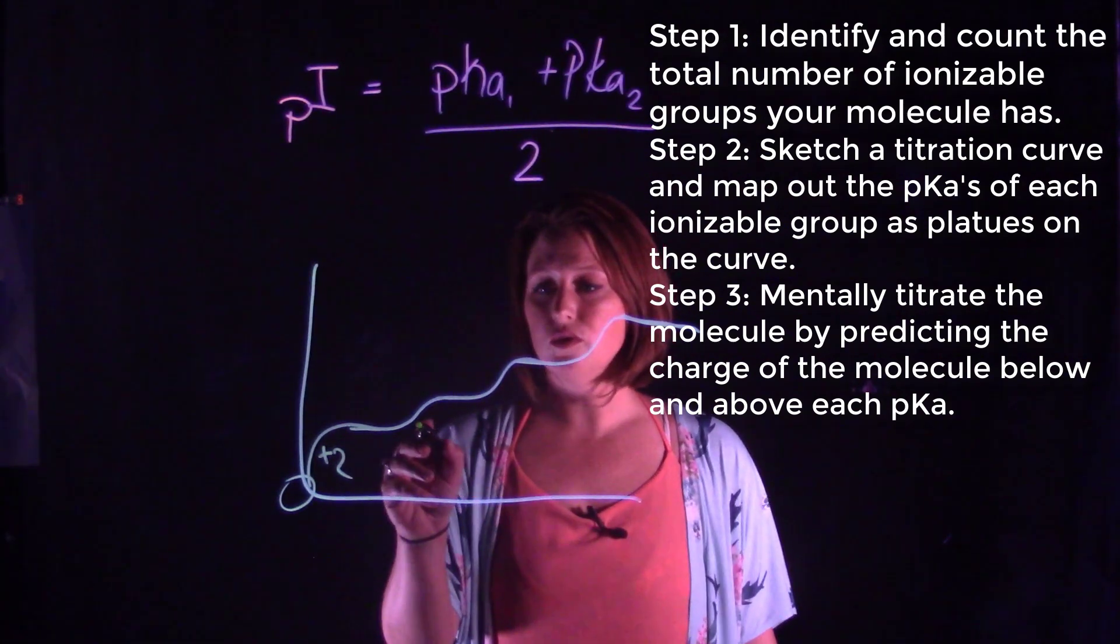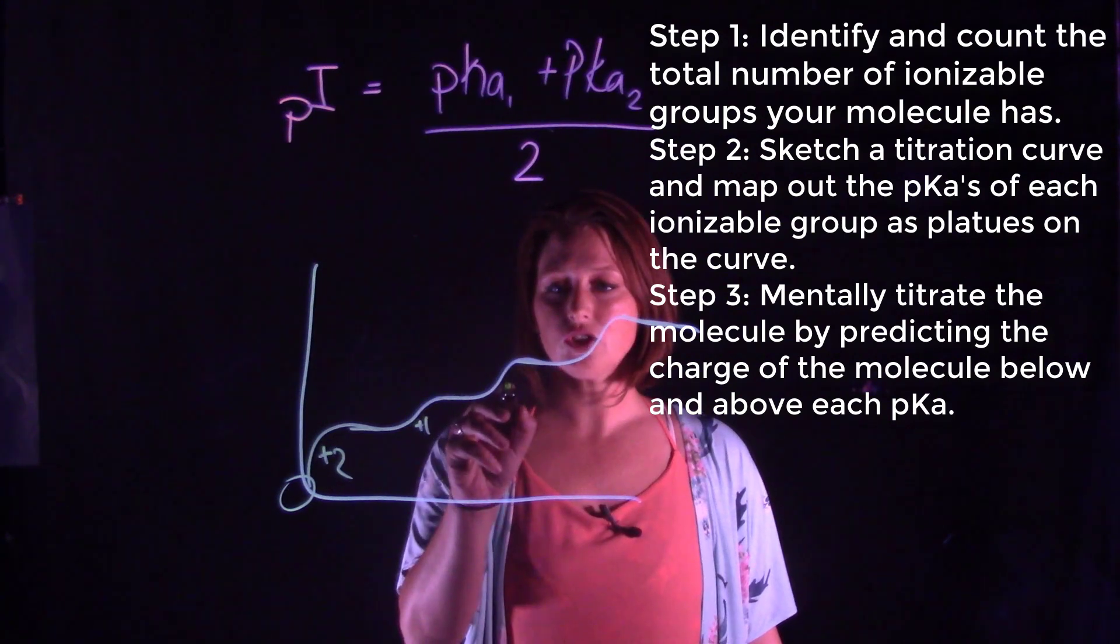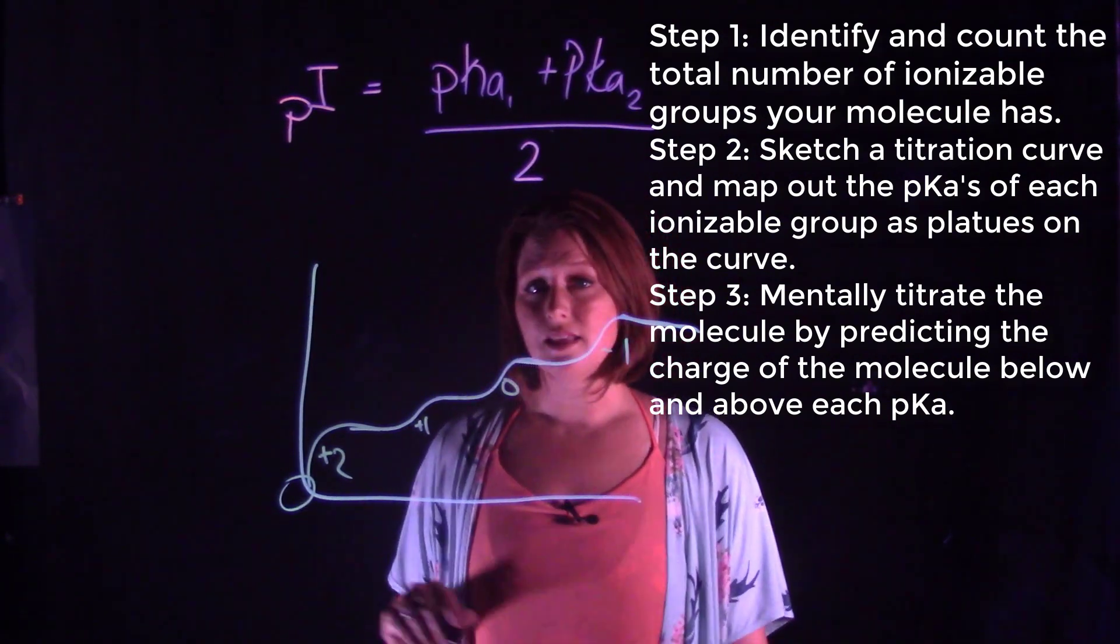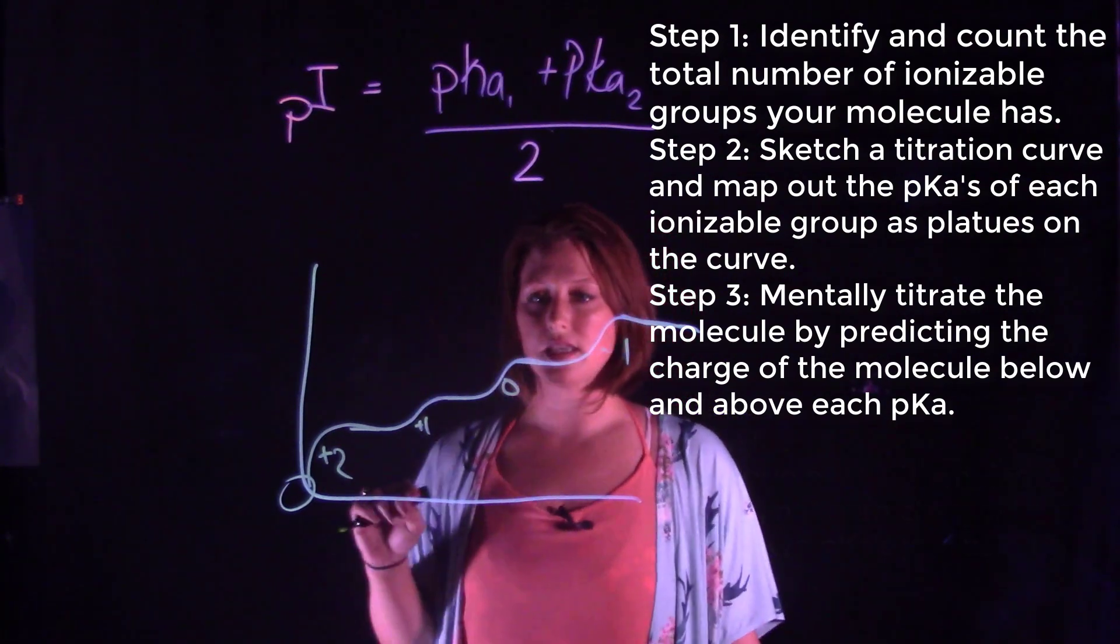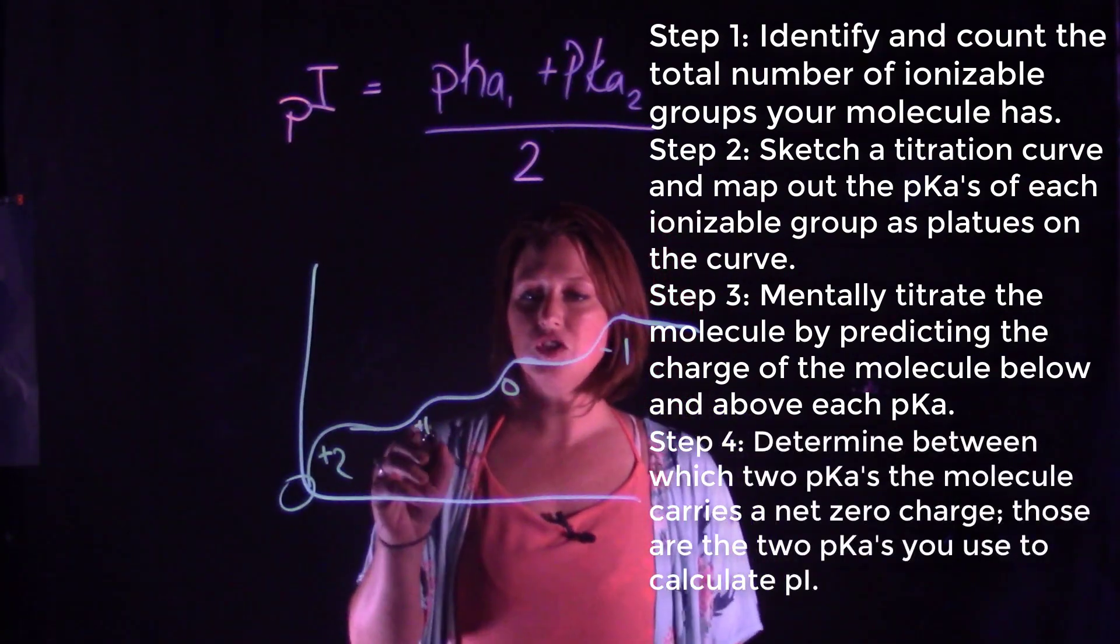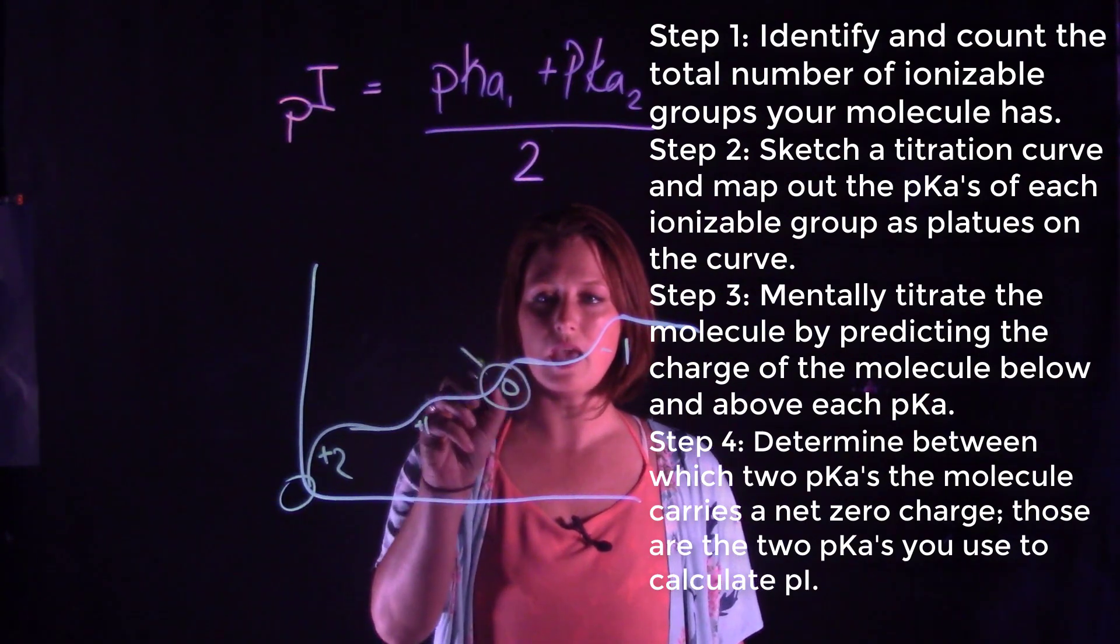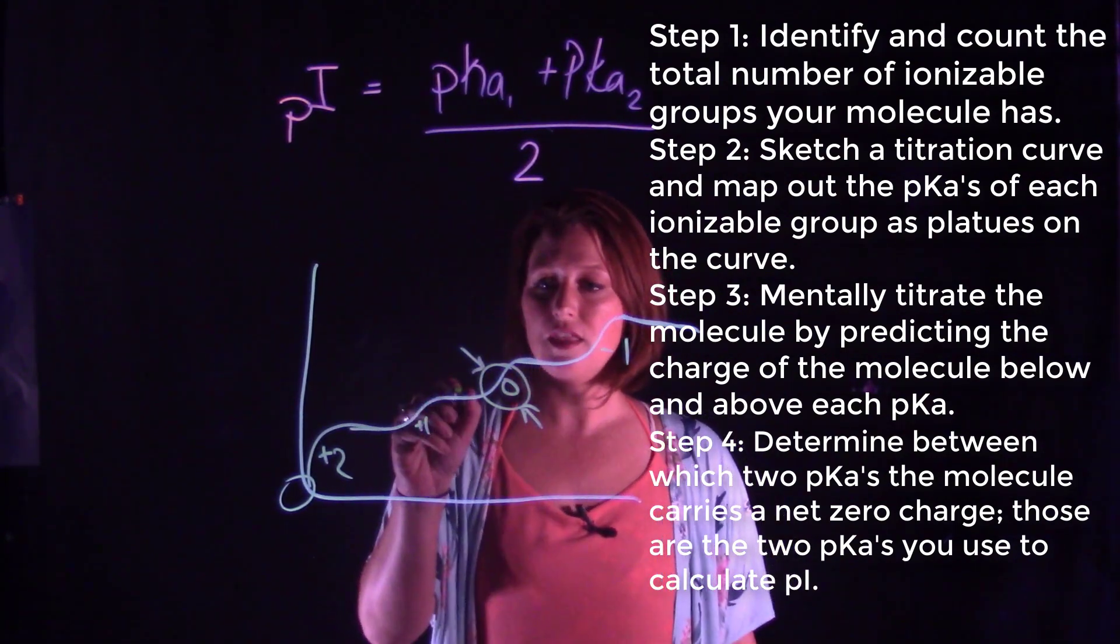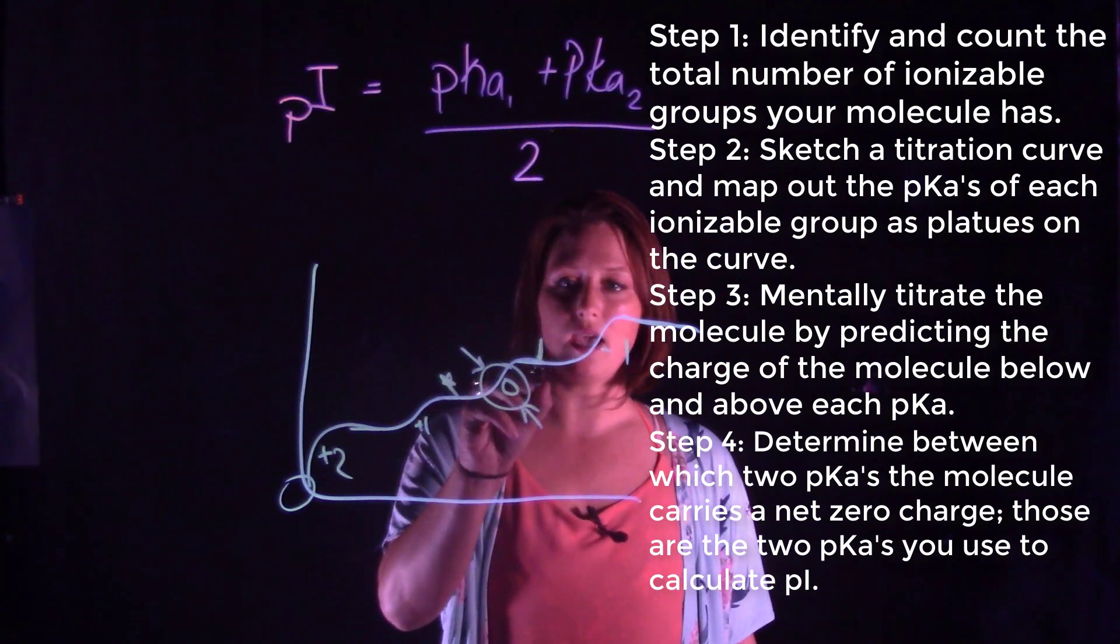Then at that point you're going to take a step back in step four and determine which two pKa's bracket the net zero charge. These are the two pKa's that you use in your calculation.